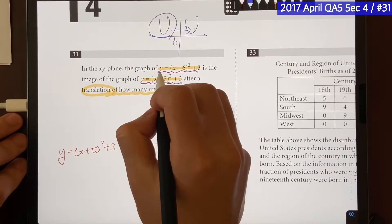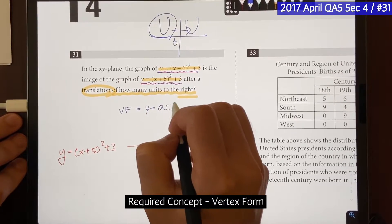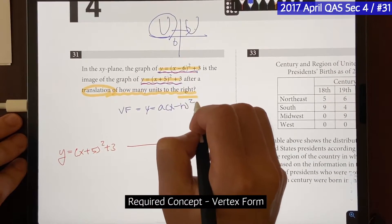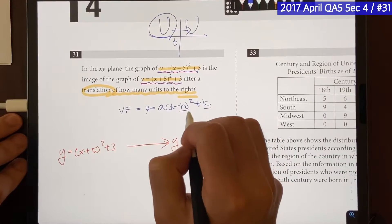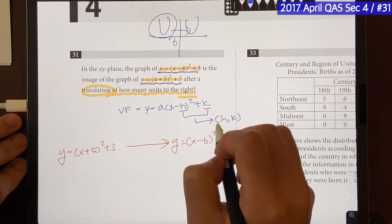both of these equations are actually in the vertex form, which is y equals a parentheses x minus h square plus k, where h and k represent the location of the vertex in terms of h and k.